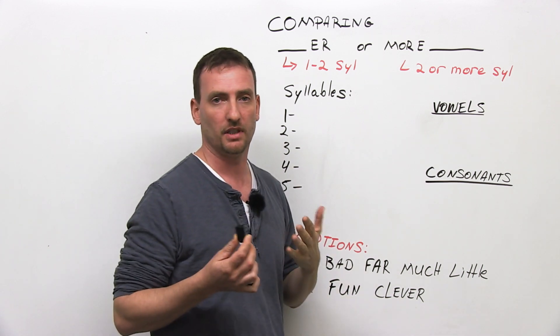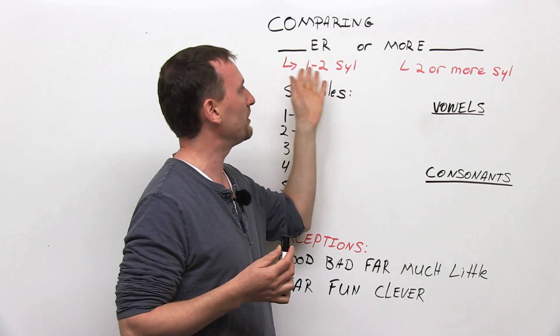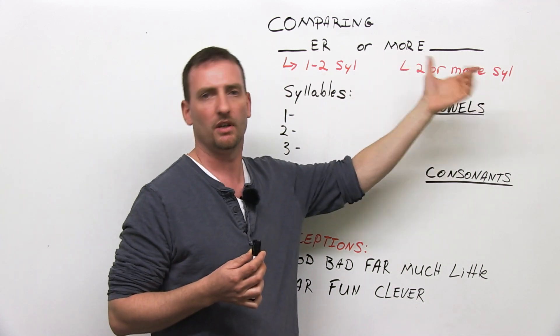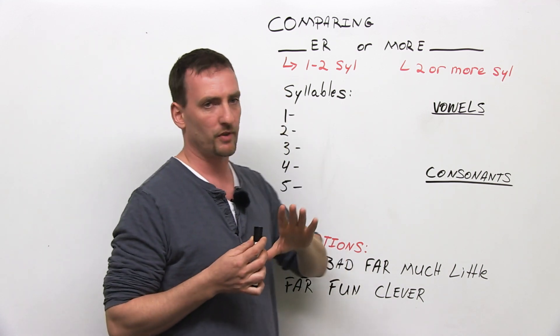When to use '-er', when to use 'more', when we are comparing things. For example, with adjectives. When do I say better, for example, or happier, or more expensive? How do you know which one to use? So, it's very, very simple.